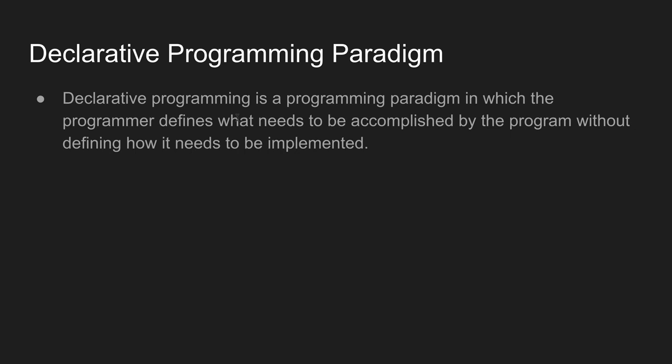Declarative Programming is a programming paradigm where the programmer defines what needs to be accomplished by the program, without defining how it needs to be implemented. So, we can explain what to do, but without defining how it needs to be implemented. If you follow that style, that is the Declarative Programming Paradigm.